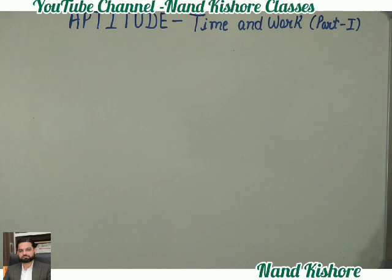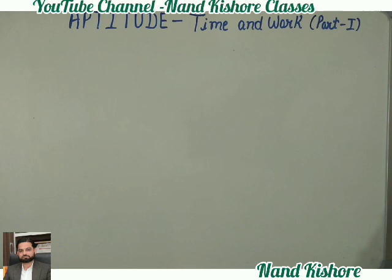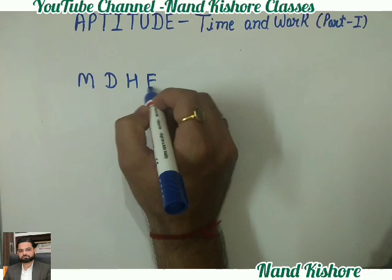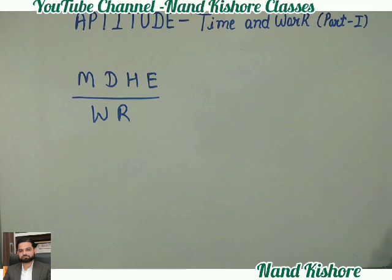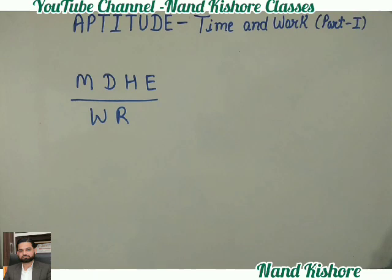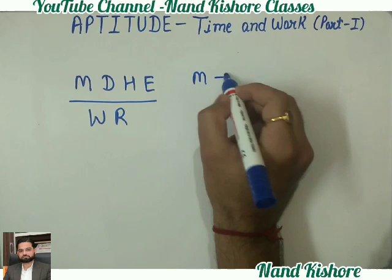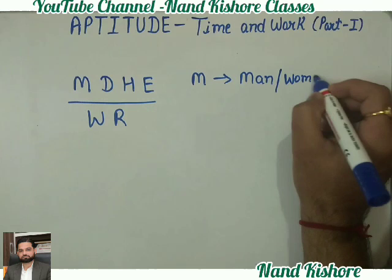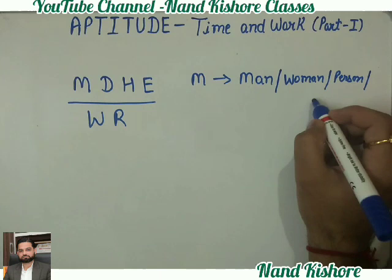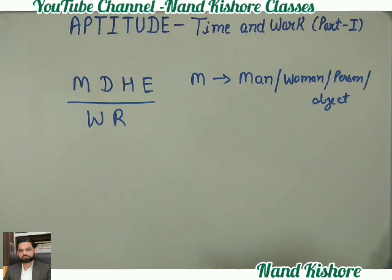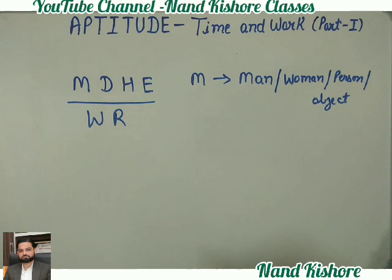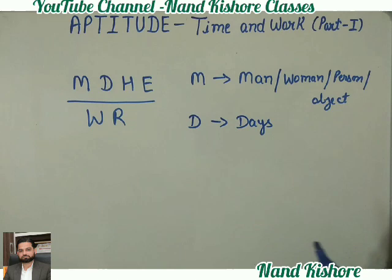First of all, to do these kinds of questions, we need to learn one formula, one new method. I am going to write on the board — have a look. I'm writing a few words: M D H E over W R. So first let's remember this word and also understand the meaning of each letter. M means 'man' — यानि किसी question में अगर किसी person की involvement हो। D is used for days — कितने दिनों का कुछ ऐसा question में आए, तो D we are going to use for days.